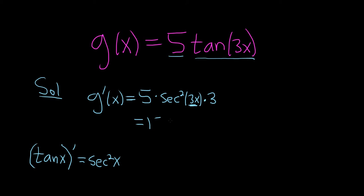So this will be 15 secant squared of 3x. And that will be the derivative. You just multiply the 3 and the 5 and that gives you 15.